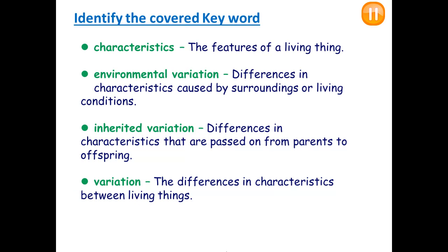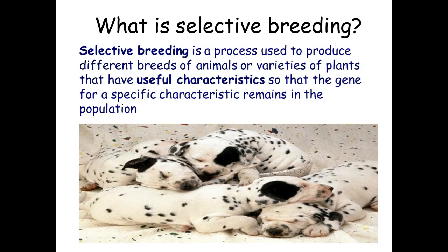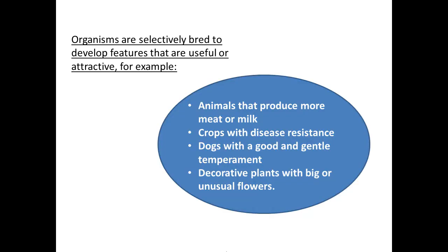In this lesson we are going to learn about selective breeding. Selective breeding is a process used to produce different breeds of animals or varieties of plants that have useful characteristics, so that the gene for a specific characteristic remains in the population. Organisms are selectively bred to develop features that are useful or attractive — for example, animals that produce more meat or milk, crops with disease resistance, dogs with a good and gentle temperament, or decorative plants with a big or unusual flower.